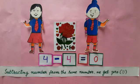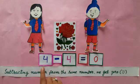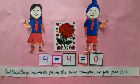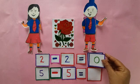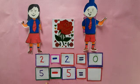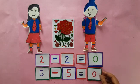My children, by subtracting a number from the same number, we get 0. Let us try to solve these sums. 2 minus 2 is equal to 0. 5 minus 5 is equal to — yes, what will come in the box? Yes, it is 0.